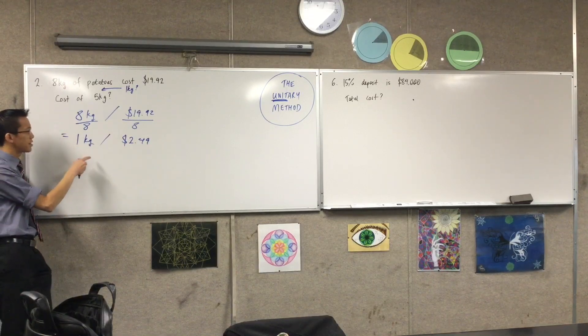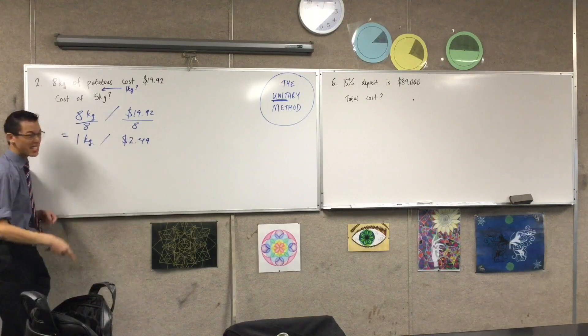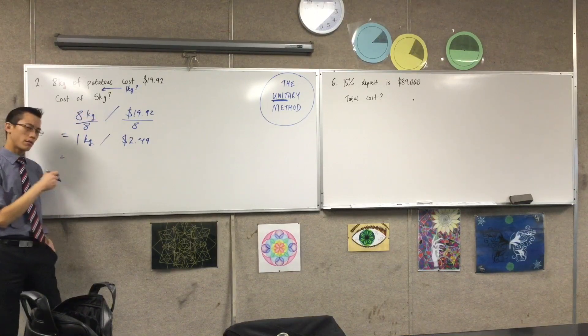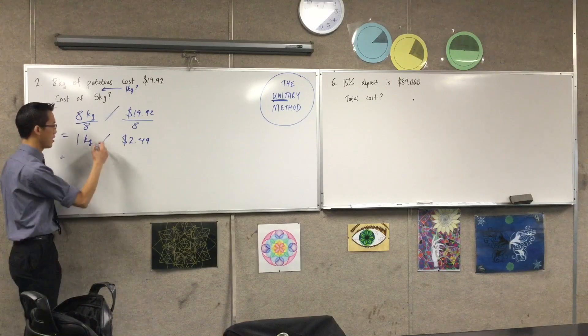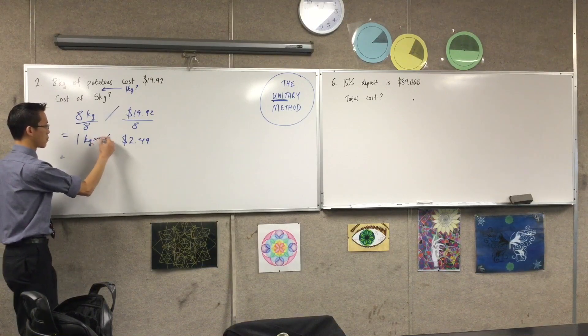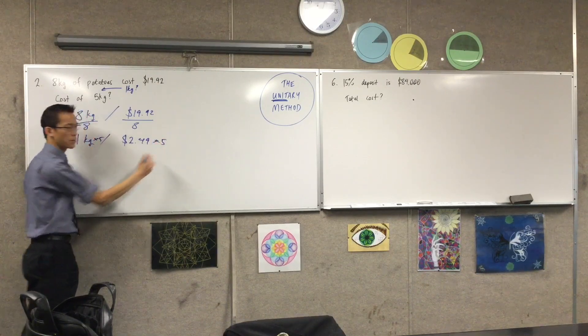So from there, you can see, having answered this, it's really easy to go to this final step here, which is, well, if I want not one kilo, but five, I'm going to multiply this one by five, which means I'm multiplying this one by five.